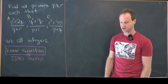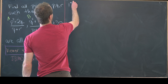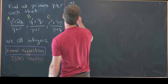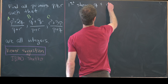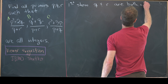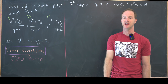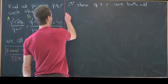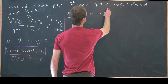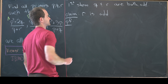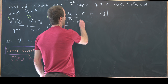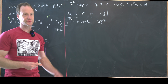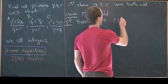We'll start by showing that q and r must both be odd primes, so it's impossible for them to equal 2. Our first claim is that r is odd. We're going to prove this by way of contradiction, so let's suppose that r is even. There's only one even prime, so that means we're supposing r is equal to 2.